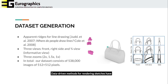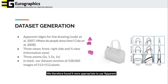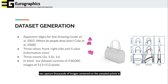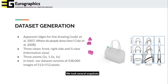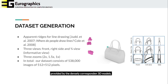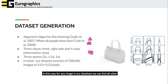Data-driven methods for rendering sketches have recently been proposed. However, these algorithms are generally tied to a single category — for example, they are only capable of rendering faces. We therefore found it more appropriate to use apparent ridges in our context. Using these rendering engines, we captured thousands of images centered on the sampled point in our 3D model dataset. We took several snapshots using three viewports commonly found in design sketches and three zoom levels. Furthermore, we augmented this image dataset with matching information provided by the densely corresponding 3D models. In this way, for an image in our database, we can find all other images containing the corresponding point.